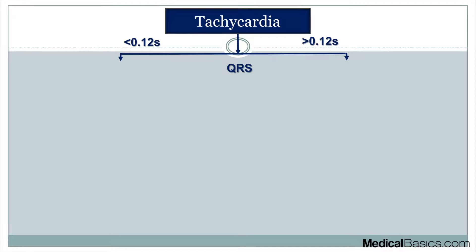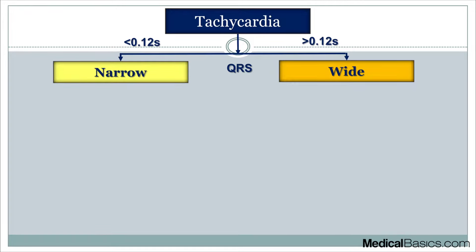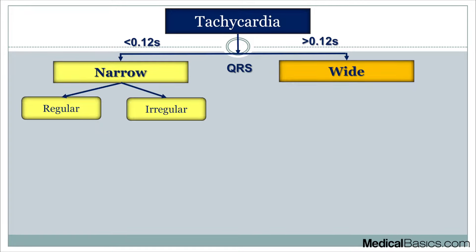What we're dealing with when we're talking about narrow and wide is the QRS. Anything less than 0.12 seconds is going to be narrow, and anything greater than 0.12 is going to be wide. After the narrow versus wide, it's going to be broken down into regular and irregular narrow complex tachycardia.